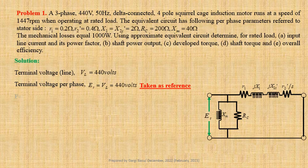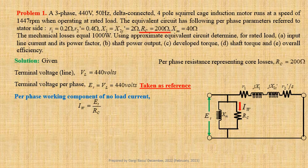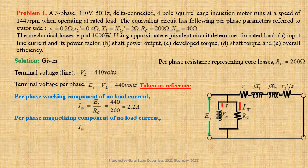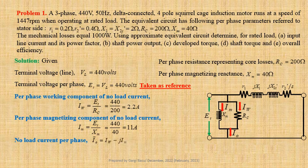Now we shall determine per-phase components of no-load current. Working component: Iw = Et / Rc = 440 / 200 = 2.2 A. Magnetizing component: Im = Et / Xm = 440 / 40 = 11 A. Therefore, no-load current per phase I0 = Iw − jIm = 2.2 − j11 A.